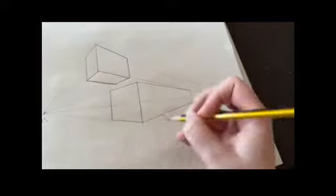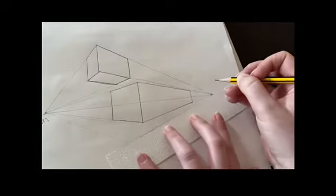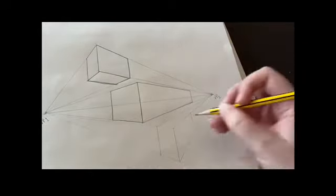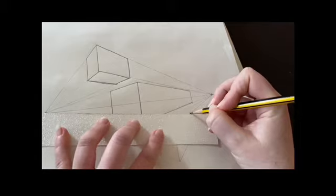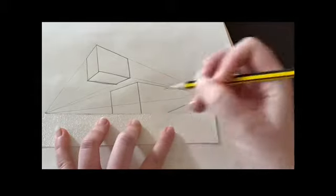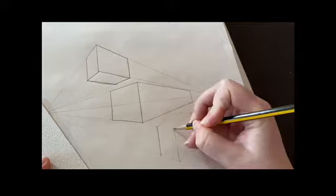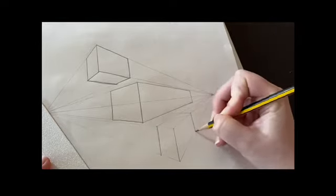We need to cross these over to the vanishing points they're not already joined to. So the tops of those lines are just drawn in, joined to the opposite vanishing points. And there we have our final box shape. You can darken that in with a little outline as well.